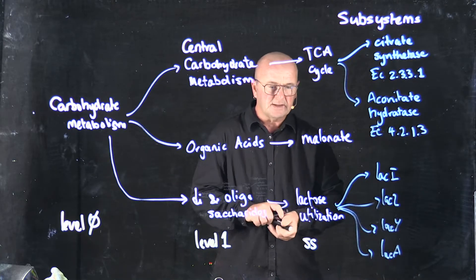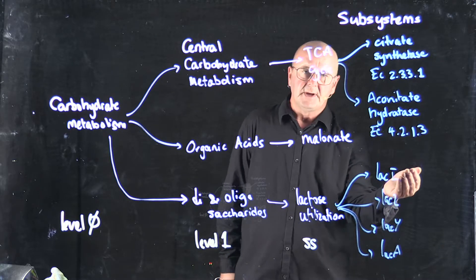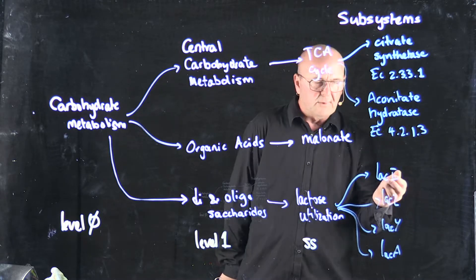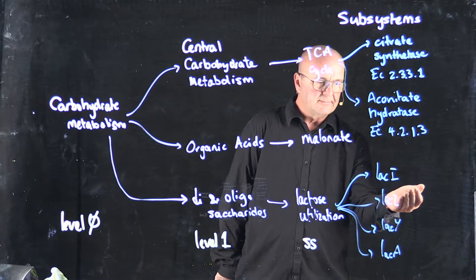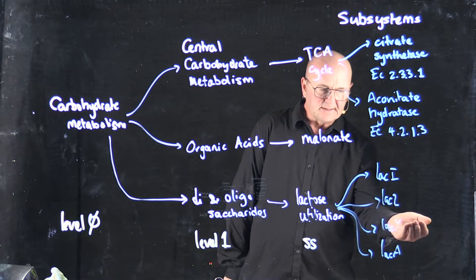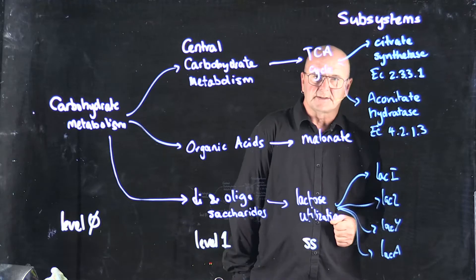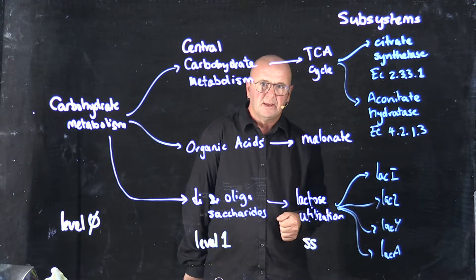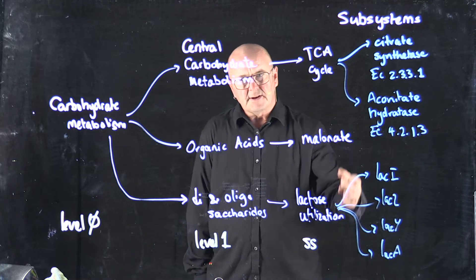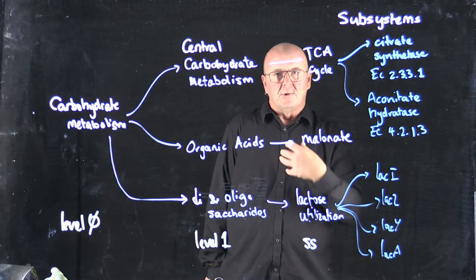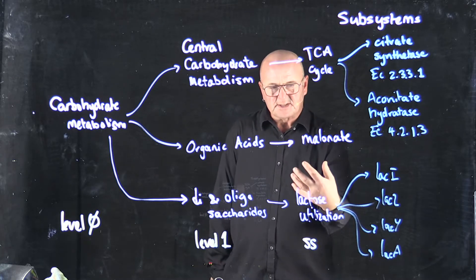Now, in the case of lactose utilization, we don't call them by their gene names. We call them the lactose repressor, beta-galactosidase, the lactose permease, and the lactose transacetylase. But this notion of having a hierarchy has really helped to organize the subsystems.